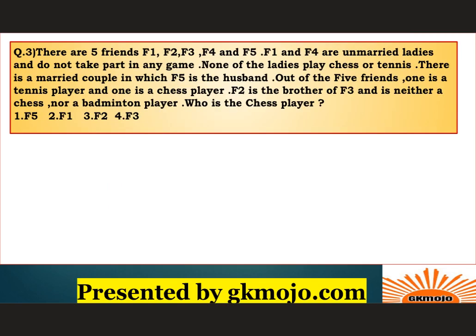Question 3: There are five friends F1, F2, F3, F4, and F5. F1 and F4 are unmarried ladies and do not take part in any game. None of the ladies play chess or tennis. There is a married couple in which F5 is the husband. Out of the five friends, one is a tennis player and one is a chess player. F2 is the brother of F3 and is neither a chess nor a badminton player. Who is the chess player? We'll set up a table for gender, sport, and marital status.